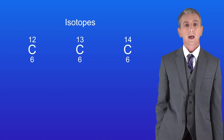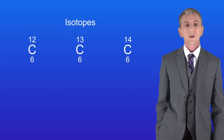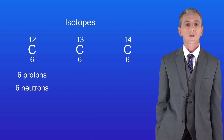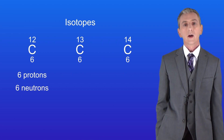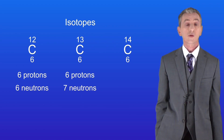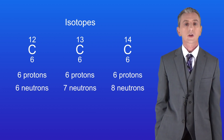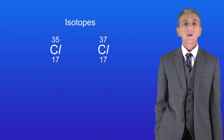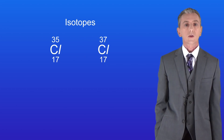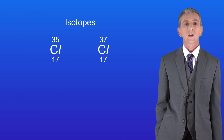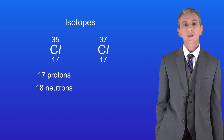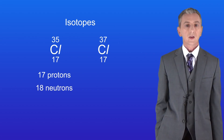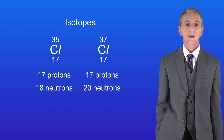Carbon has three common isotopes. One isotope contains six protons and six neutrons, whereas another isotope of carbon contains six protons and seven neutrons. Finally, a third isotope of carbon contains six protons and eight neutrons. This shows the two most common isotopes of chlorine. The first isotope of chlorine contains 17 protons and 18 neutrons and the second isotope contains 17 protons and 20 neutrons.